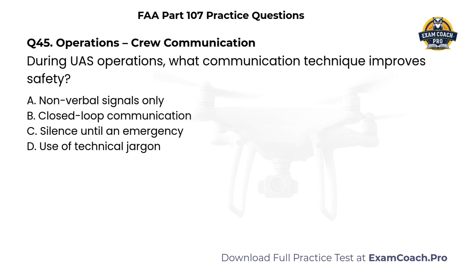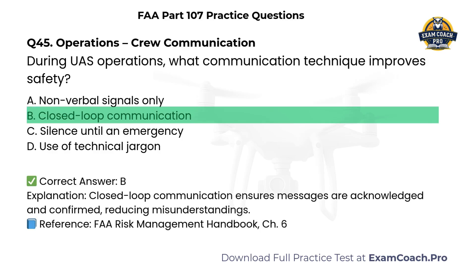Operations — Crew Communication. During UAS operations, what communication technique improves safety? A. Nonverbal signals only. B. Closed-loop communication. C. Silence until an emergency. D. Use of technical jargon. Correct answer: B. Closed-loop communication. Closed-loop communication ensures messages are acknowledged and confirmed, reducing misunderstandings.